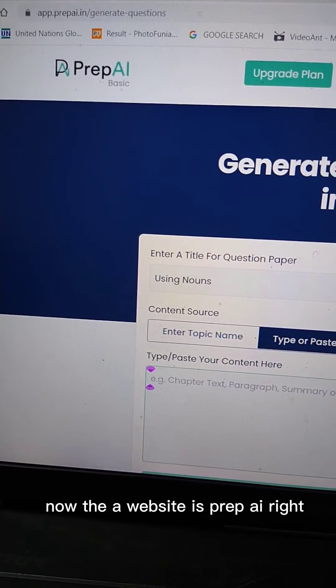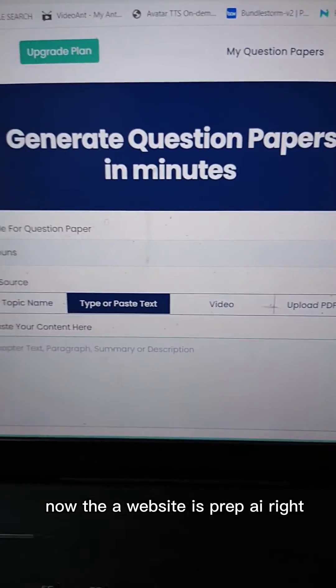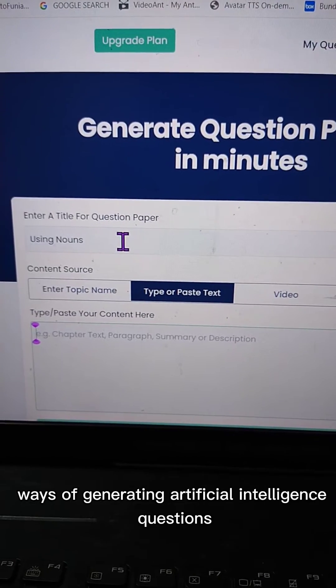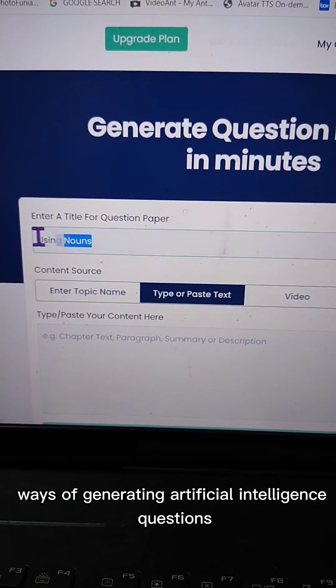Now the website is prep ai, right? So you have different ways of generating artificial intelligence questions. So all I just need to do is type a topic: robotics, robots.